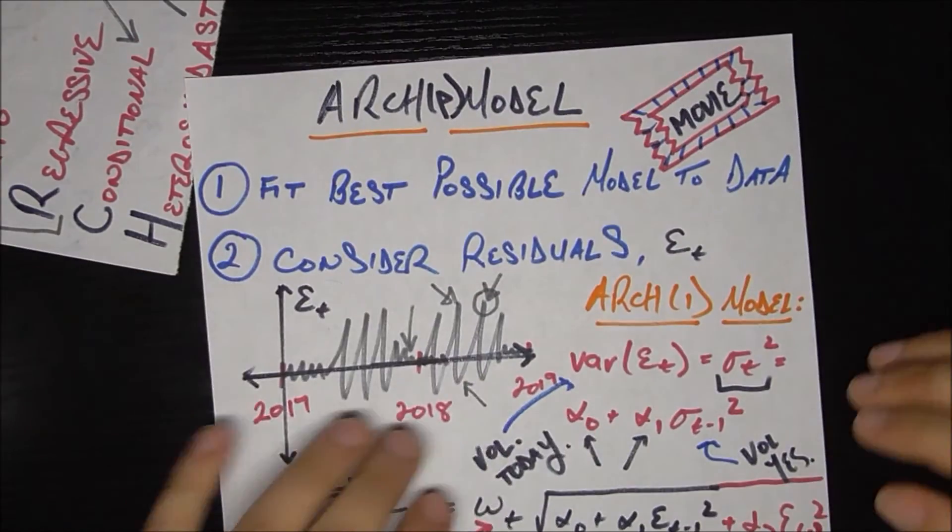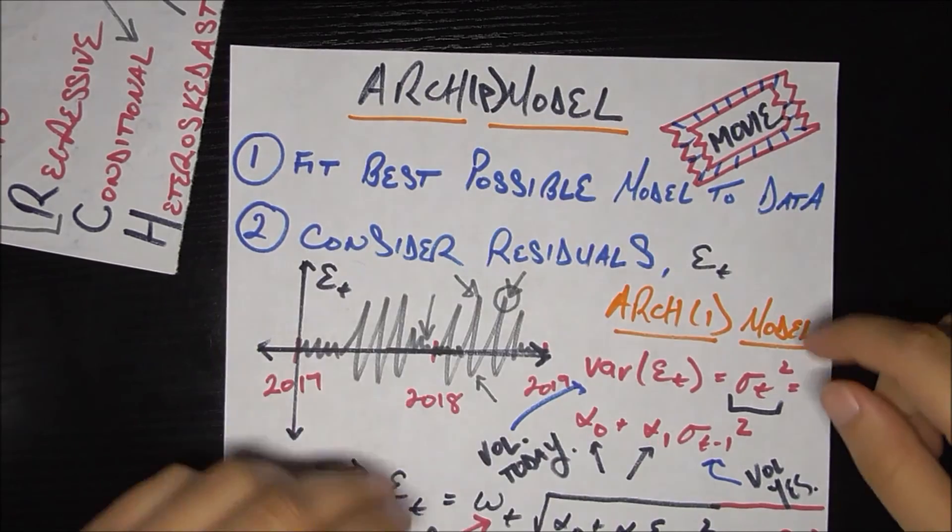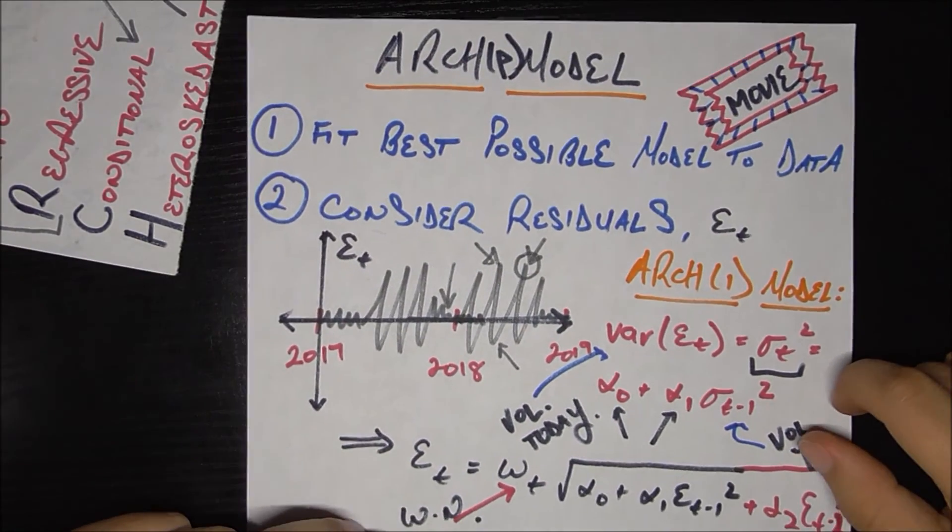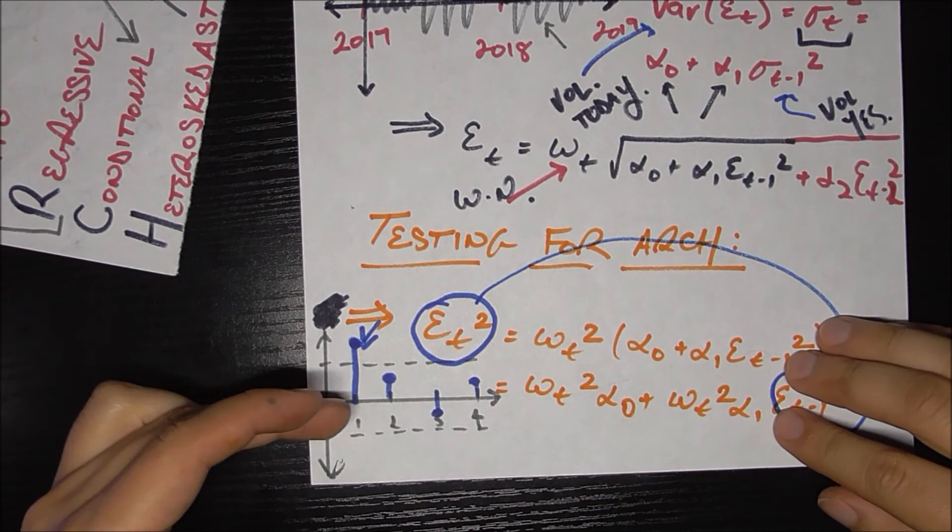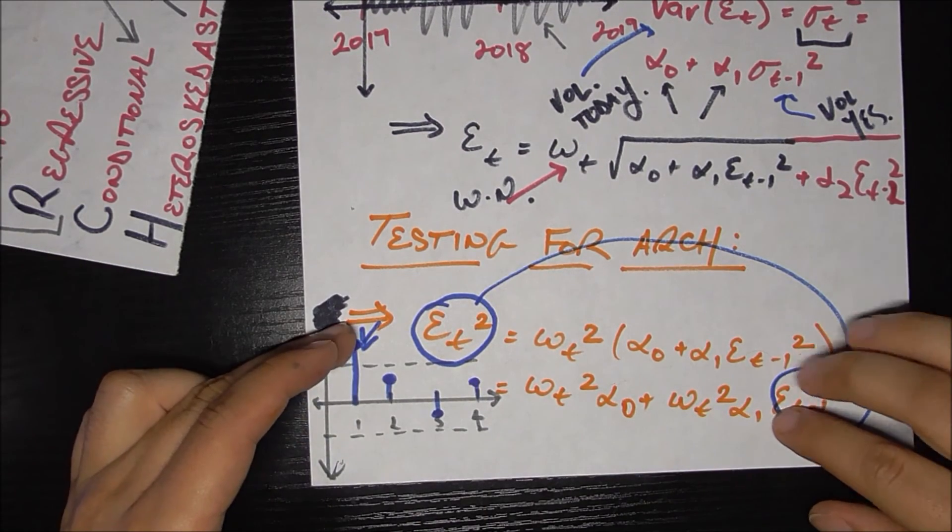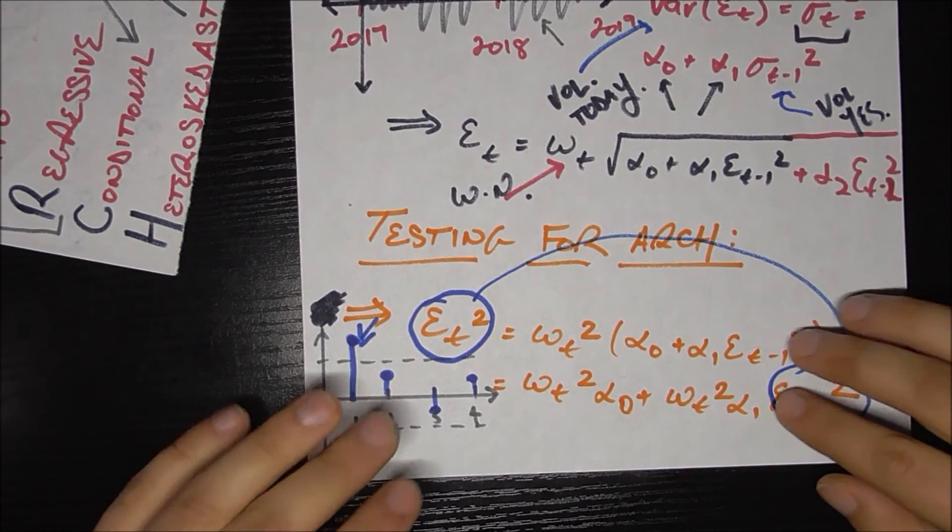So in the wild, what you would do is you're this guy running the movie theater, you fit your best possible model to the data, you have your residuals, they look kind of weird, you go ahead and create a correlogram, you see that the lag at one is significant, and you say, bam, I want to fit an ARCH(1) model to it.